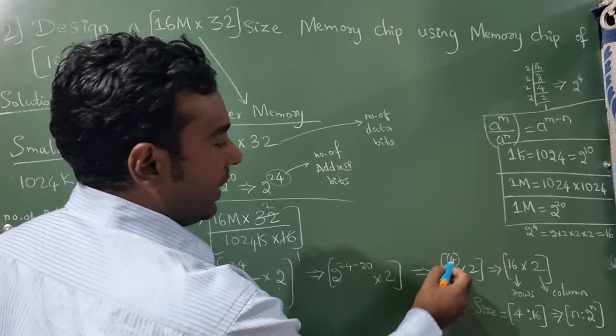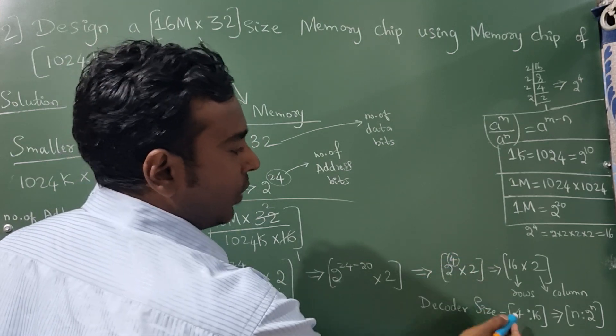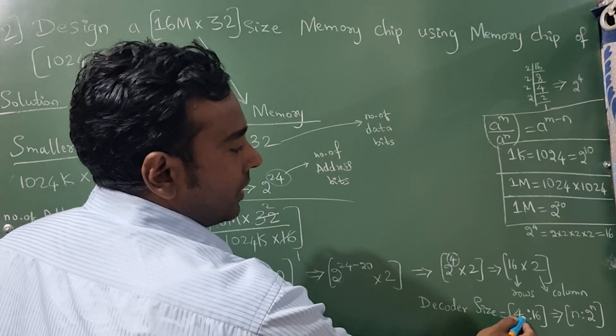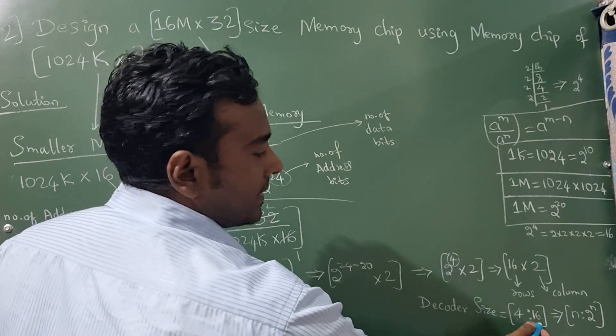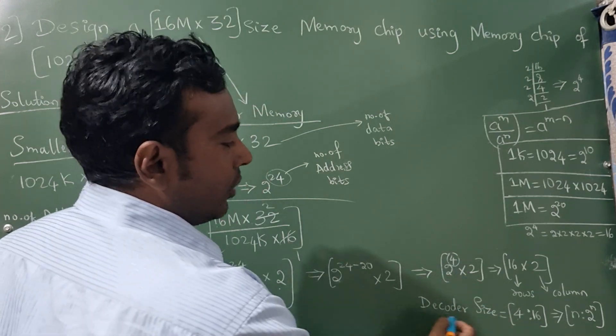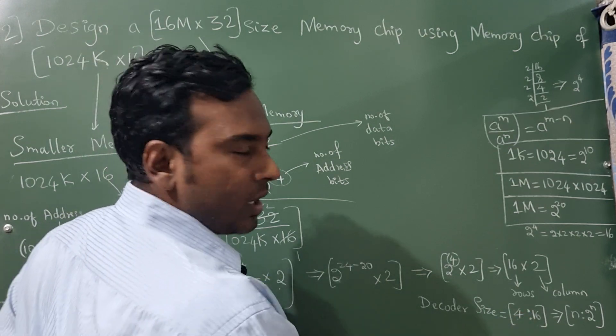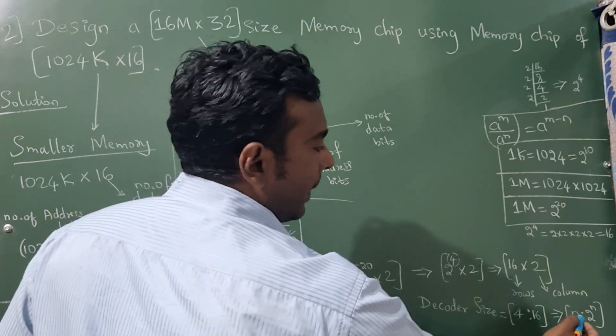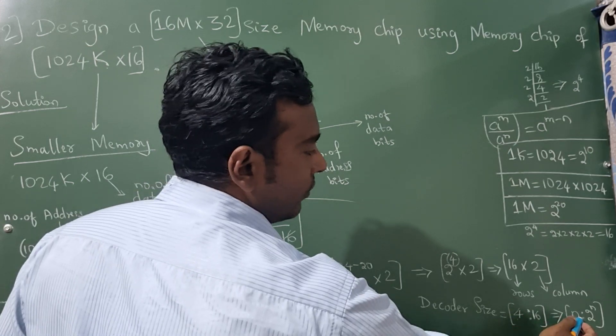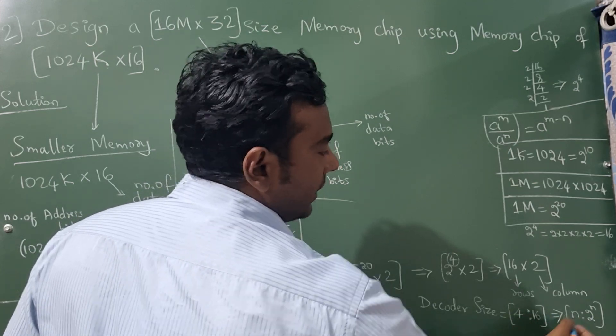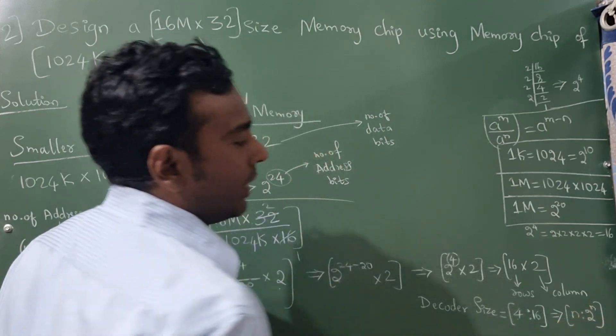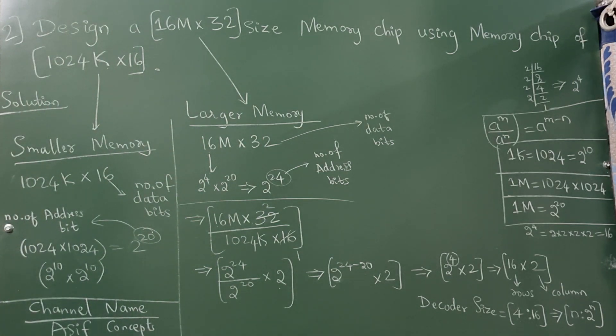Now to write a decoder size, decoder size I have taken this exponential number that is 4. Here I have written, now 2 raise to 4 is 16, so decoder size is 4 is to 16. So I have written a formula: n value is 4, now the next value will be 2 raise to n.